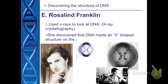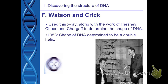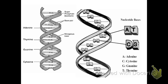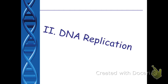Rosalind Franklin was the person who came up with the idea of the double helix. Watson and Crick also published on this, and many people believe Franklin discovered it first — some even think Watson and Crick used her work. However, Watson and Crick were the most vocal about the double helix and were ultimately credited with the discovery, winning the Nobel Prize for their work.